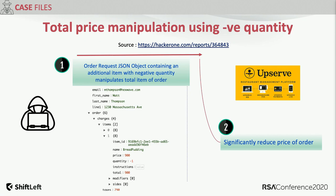Another case with Upserve: looking at a JSON dump visible in browser developer tools, when you add items to a cart there is a price and quantity — both were reflected. A map is applied to calculate the cumulative price. This individual adjusted the quantity to minus one, and the price adjusted to lower than expected, almost landing at zero.